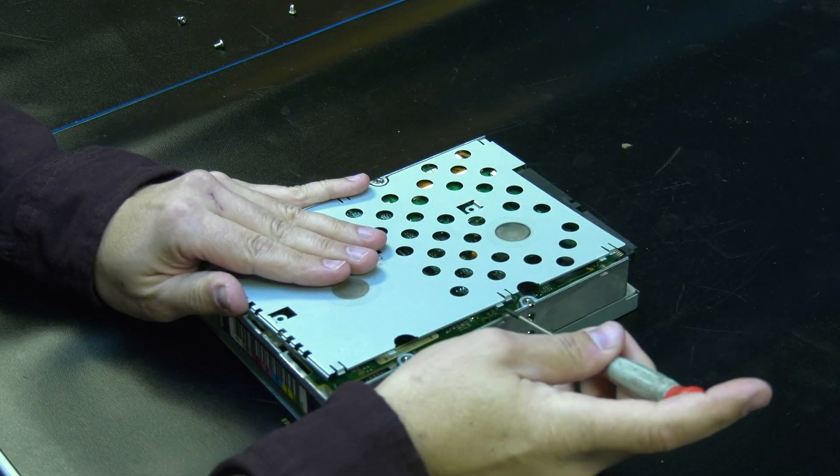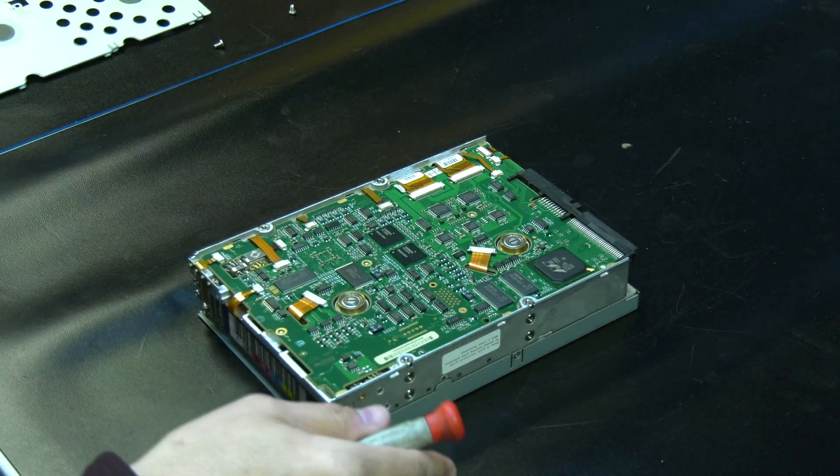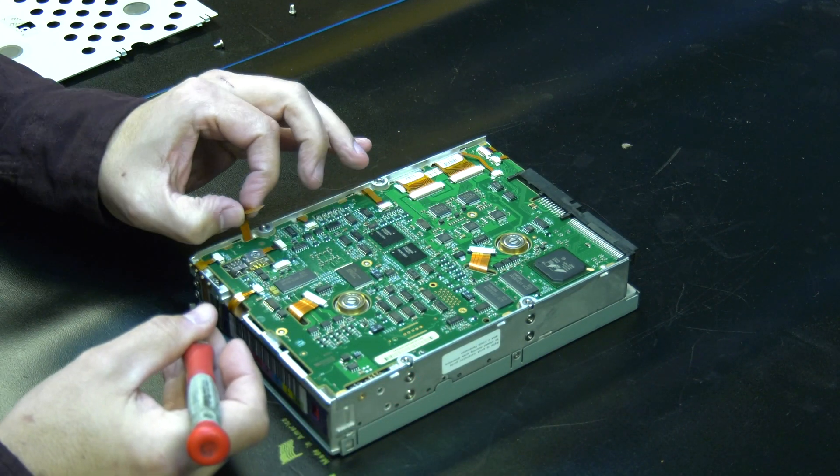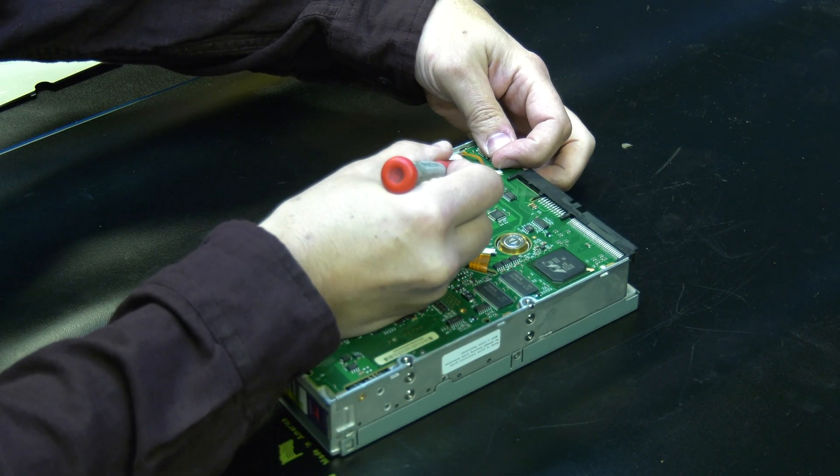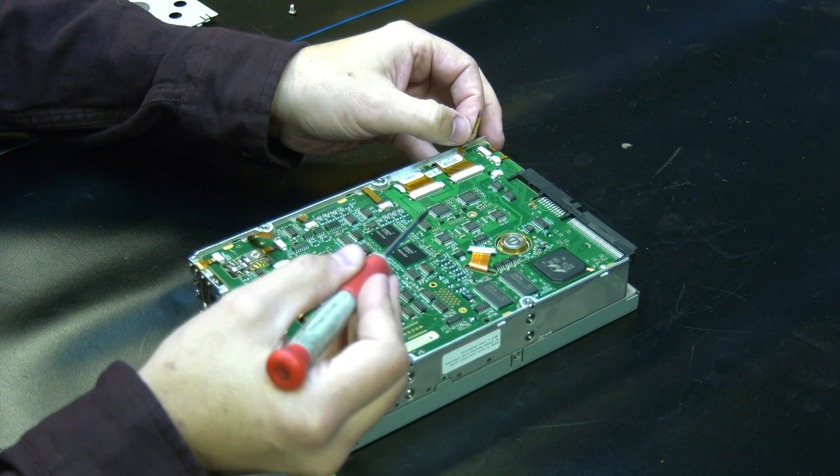Once the bottom board is exposed, there are two thin ribbon cables you will need to undo from the bottom board. Please be very careful as these cables are very thin and can tear easily.